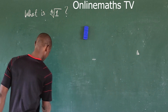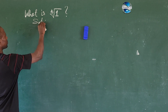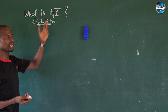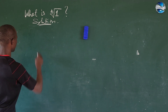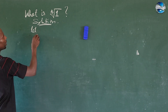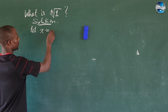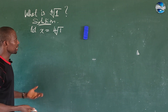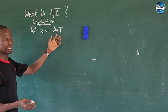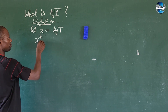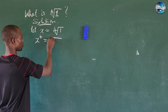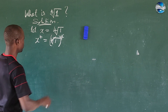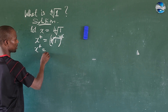Let's take a solution. The first thing we get to do here is to equate this to an alphabet. So from here, let's take x is equal to the fourth root of one. All we need to do is to take the fourth power of both sides. So this now gives us x to the power of four is equal to the fourth root of one all raised to power four, which leaves us with x to the power of four is equal to one.